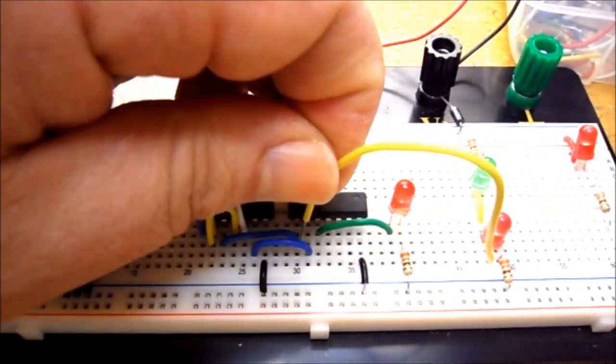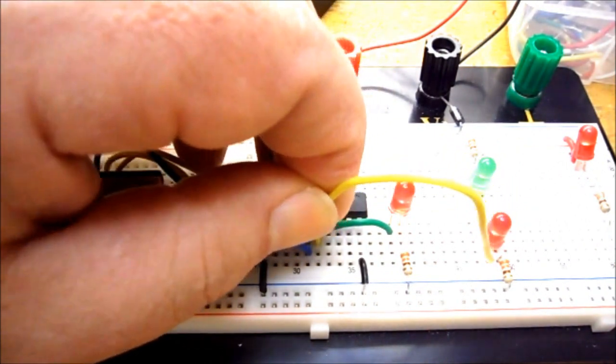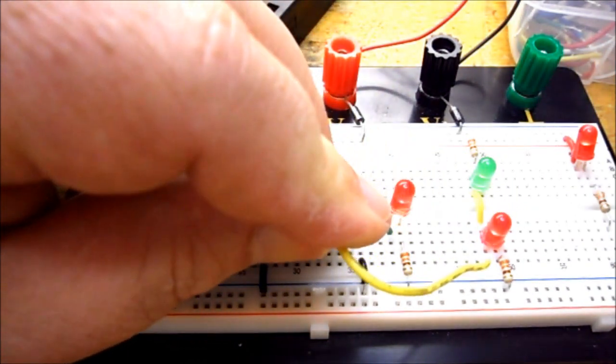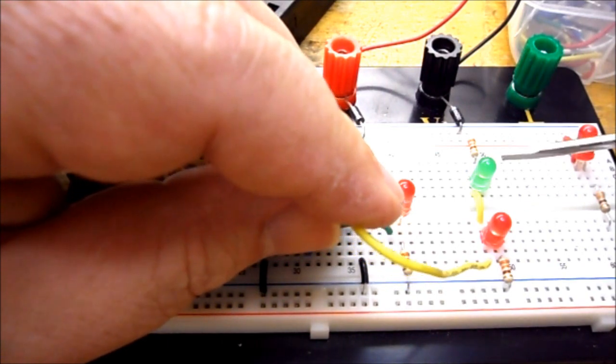So I'm going to check and see what logic I am getting out of my OR gate. And both LEDs are on, indicating there's no logic.